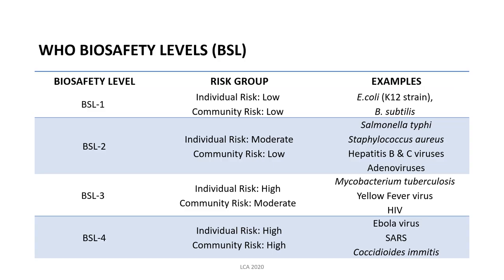We start first with BSL 1. BSL 1 is the lowest bio-safety level and is applied to agents which pose the least threat to the lab worker and the environment. Examples of microorganisms under bio-safety level 1 are the non-pathogenic strain of E. coli — the K-12 strain — and Bacillus subtilis. If a person or the community is exposed to these microorganisms, they do not pose severe or fatal disease to the individuals.